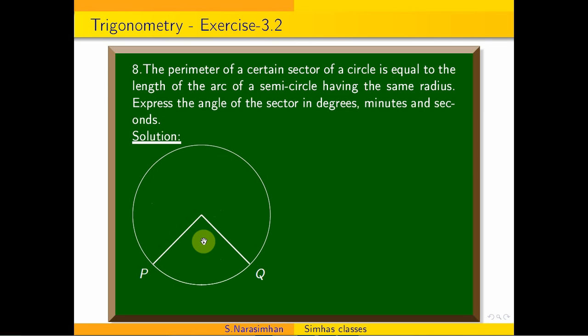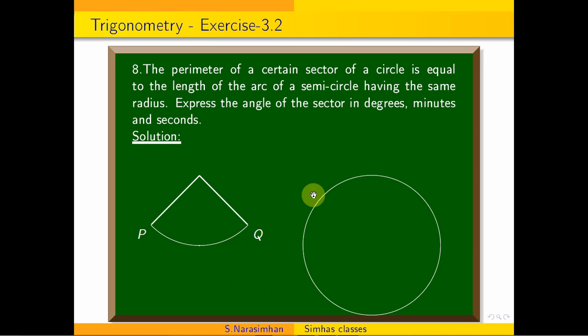This is the perimeter. This is a circle, and this is a semicircle. The semicircle arc is P'Q'. These two radii are the same.